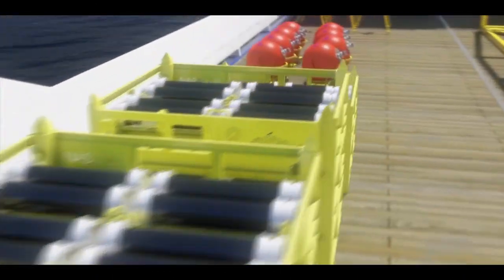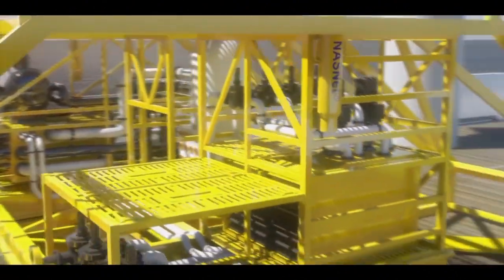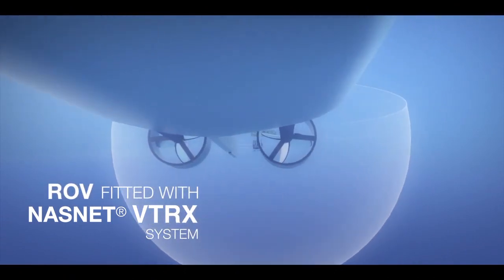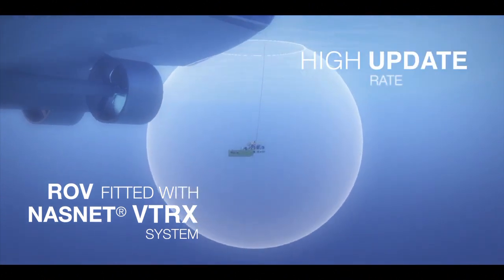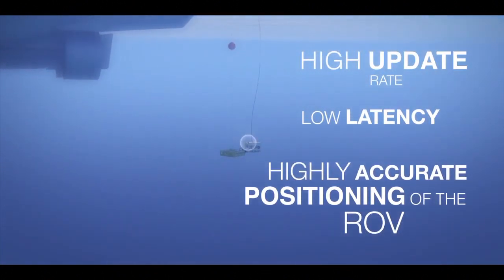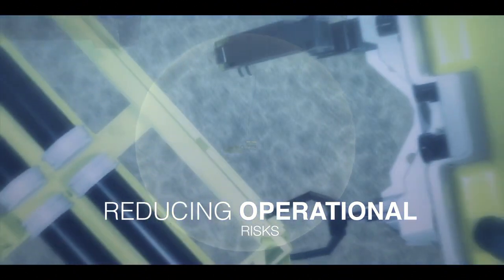The NASNET stations are then deployed in the field at the planned locations. The ROV is fitted with the NASNET VTRX system, which is a transmitter and receiver designed to provide the ROV pilot with high update rate, low latency, highly accurate positioning of the ROV throughout the water column, considerably reducing operational risks.